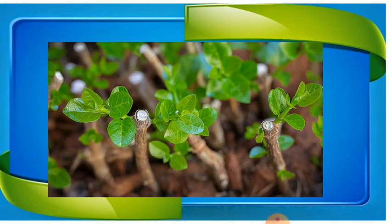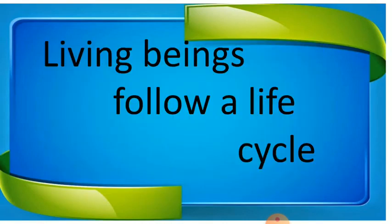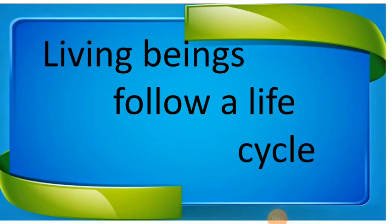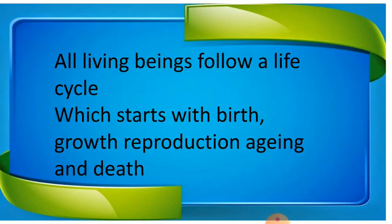The last characteristic of living beings is that they follow a definite life cycle. A life cycle is the cycle a living being follows: birth, growth, reproduction, aging, and death. When you are first born, that is called the infant period — you are a very small baby, then you grow into a baby of one or two years.